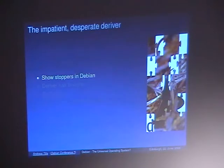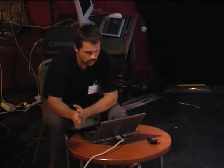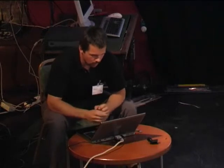Then there is the impatient, desperate deriver. He knows that Debian is something you can work on and influence, but he faces certain show-stoppers in Debian — not every maintainer is as responsive as he would like. If the deriver has a timeline and has no choice but to change Debian the way he wants, he has to derive. He knows the principle that those who do something are those who decide what is really done. But here I have a hint: leave open the way back to Debian, because if the show-stopper is solved and it's possible to reintegrate your stuff, just try it.